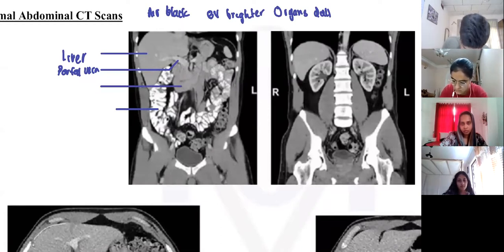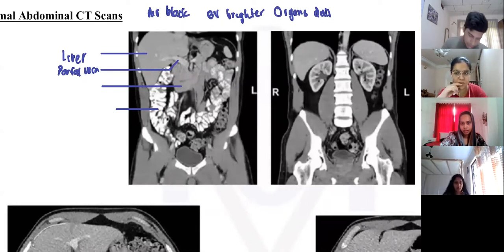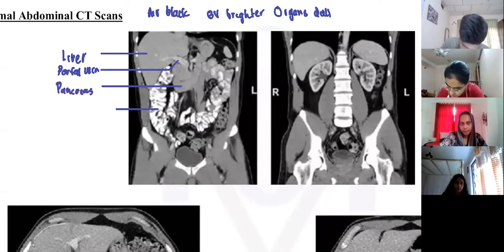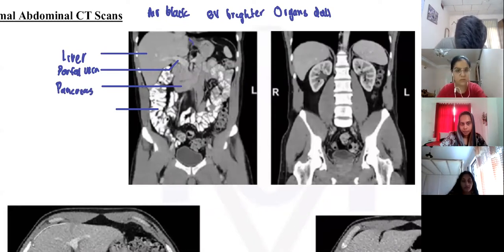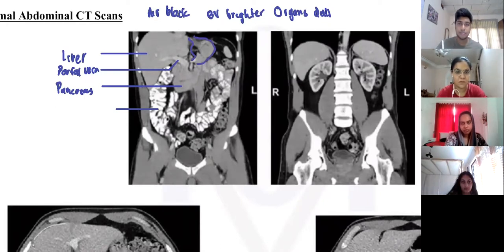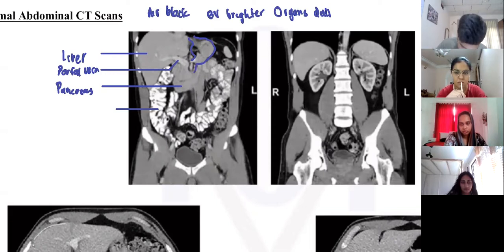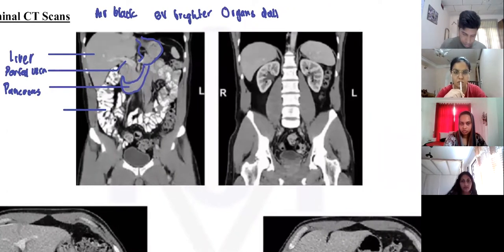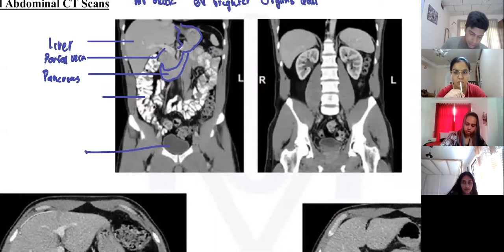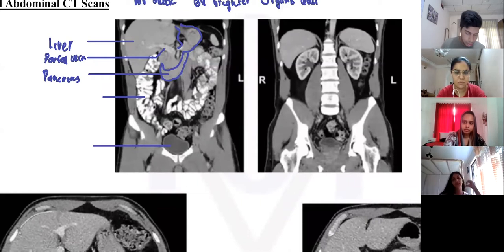Can someone tell me what this organ is? Pancreas, yes it's the pancreas. The way you check for it is: can someone label what this organ is? It's the stomach. Remember the anatomy - just below the stomach we have the pancreas. And what's this organ related to our KUB discussion? Bladder, okay. We have discussed these previously.